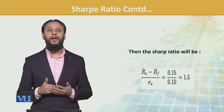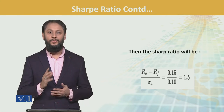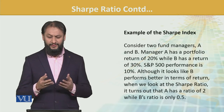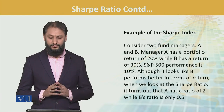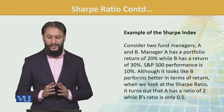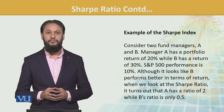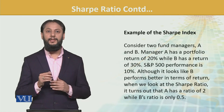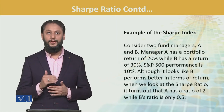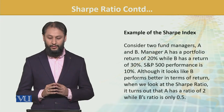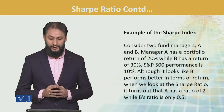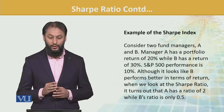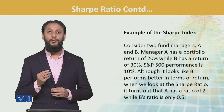Carefully take the assumption. Consider two fund managers A and B. Manager A has a portfolio return of 20%, while B has a return of 30%. The S&P benchmark performance is 10%. Although it looks like B performs better in terms of return, when we look at the Sharpe ratio, it turns out that A has a Sharpe ratio of 2, while B's Sharpe ratio is only 0.5.